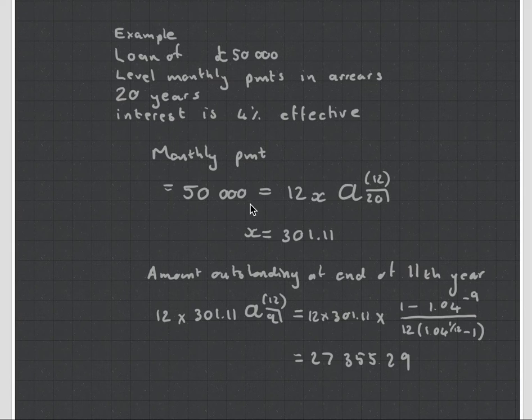Our monthly payments, we're using the prospective method, is we look at the value at the beginning at time zero. We have £50,000 of our loan here. And remember from our previous chapter on the equation of value, we equal this to 12 times our monthly payments, and we use the annuity function, which calculates the monthly payments.